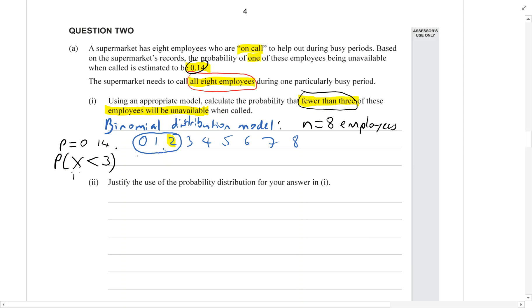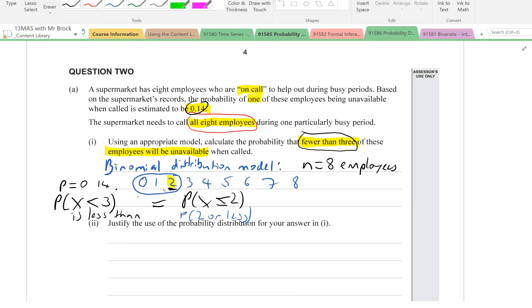You can just write as less than if the signs confuse you. That's fine. It won't affect your grade. And that is equal to the probability that x is less than or equal to two. If the signs confuse you, you could just write that as the probability of two or less.